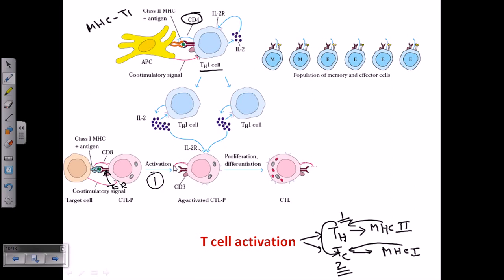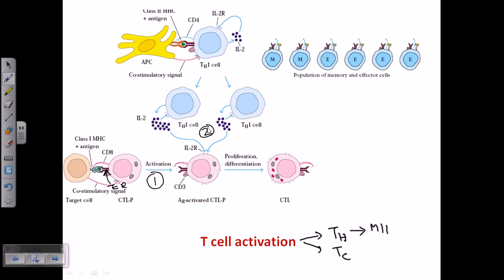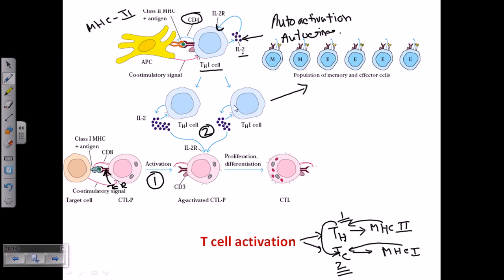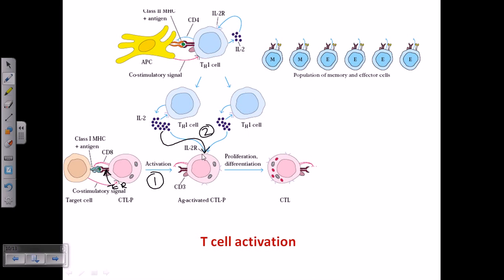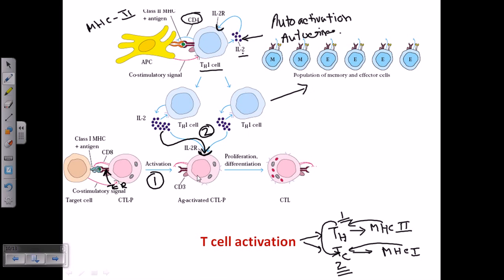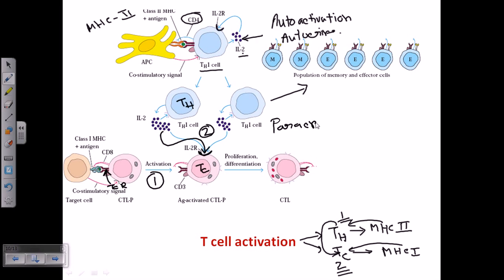Another mode of cytotoxic T-cell activation involves the T-helper cell. After the T-helper cell undergoes autocrine activation, it also secretes cytokines including interleukin 2. These IL-2 molecules can bind to IL-2 receptors present on the surface of cytotoxic T-cells. Since IL-2 is secreted by one cell type — the T-helper — and acts on a different cell type — the cytotoxic T-cell — this type of activation is called paracrine activation.